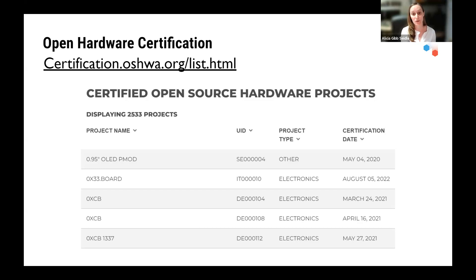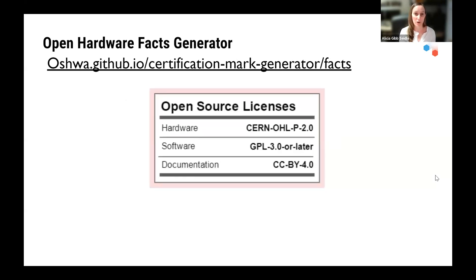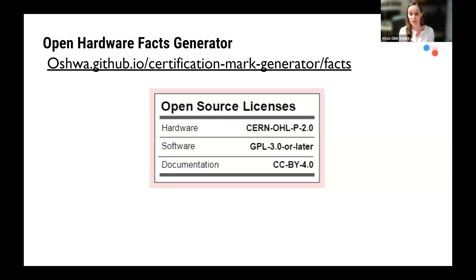The unique identifier number allows people to look up your open hardware within our database. We now have over 2,700 projects in our database. The certification creates a freely available database — and it's free to get a certification, we do not charge money for it, anybody can get one. The database captures where all the source code is for these projects, the certification date, the project type, the country code, and the unique identifier number. We also have an open hardware facts generator, a nice spot to list all your various licenses in a clean format, showing how the hardware, software, and documentation are each licensed.